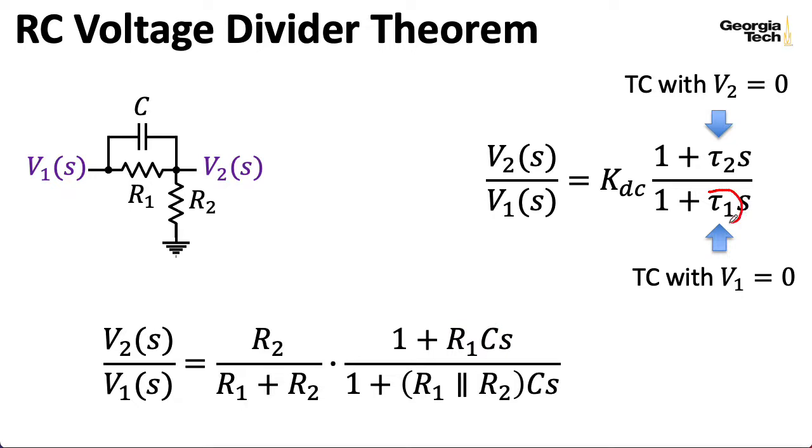All right. So for the time constant associated with the pole, we'll take V1 here and ground it, and V2 is left dangling, but I still have the R2 connected to ground here. So essentially, I have a connection here. So basically, I am now seeing R1 in parallel with R2 as I look out from the capacitor. So I write R1 in parallel with R2, and again, I have to remember to multiply by C.